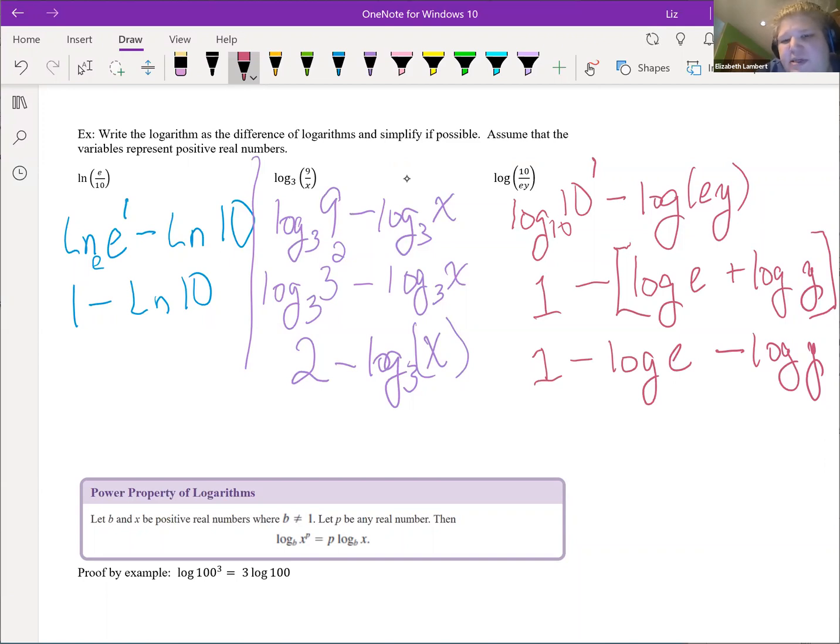Now I want you to look at the initial fraction. If you look, the 10 on top, this one is the same as log of 10. And then we had an e on the bottom and we had a y on the bottom. We had those as two separate logs and they each got their own minus.